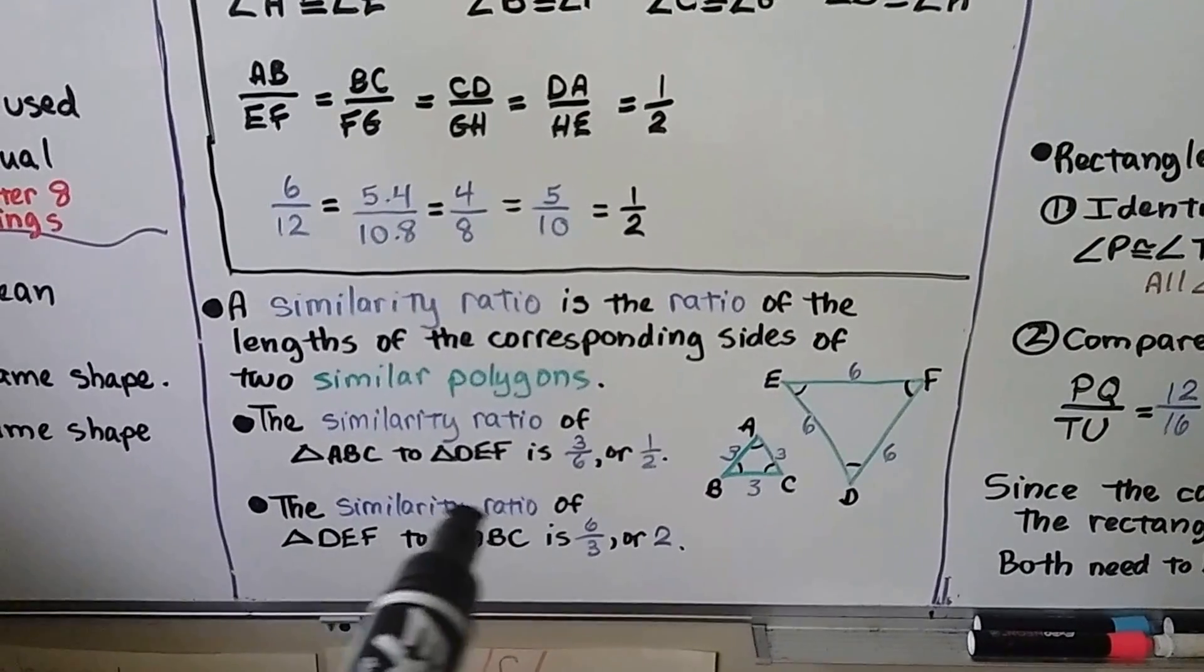Now let's compare the corresponding sides. PQ corresponds to TU. PQ over TU is 12 over 16, which simplifies to 3 fourths. PS, this 4, over TW, this 6, is 2 thirds. Since the corresponding sides are not proportional, the rectangles are not similar. They would both need to be 3 fourths, or both need to be 2 thirds.